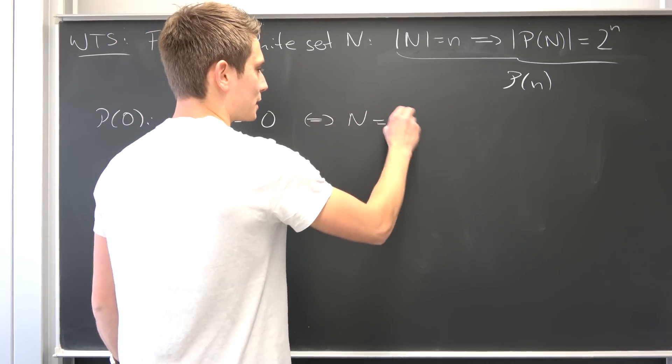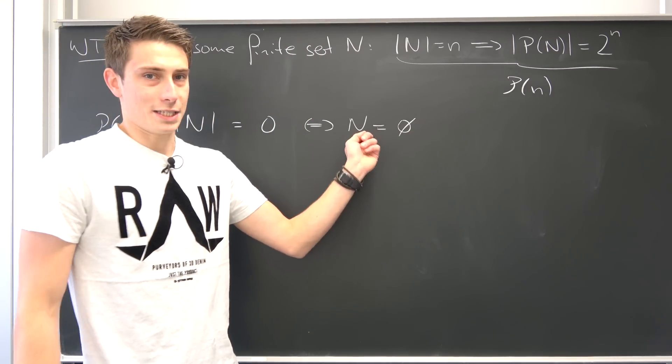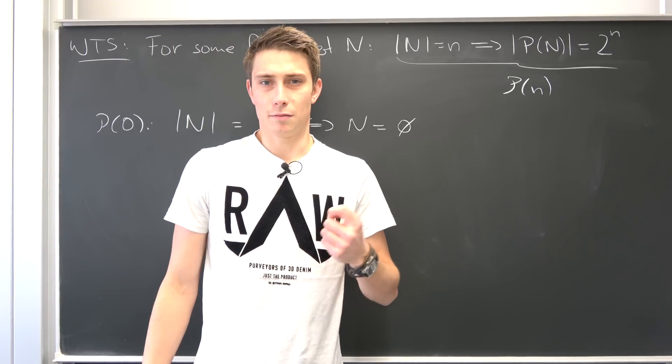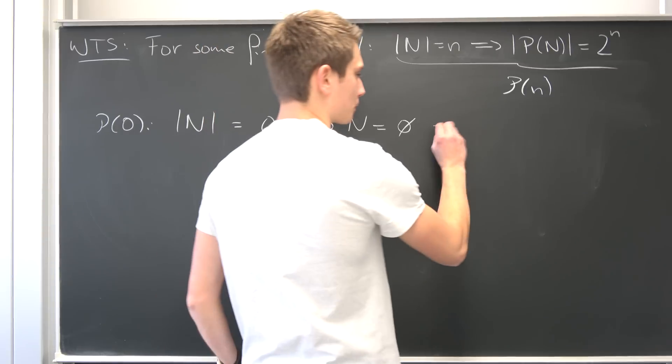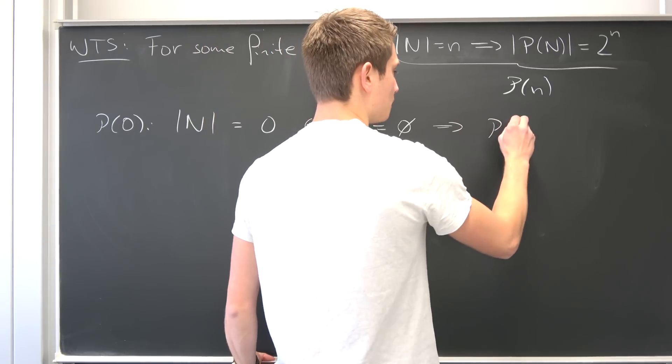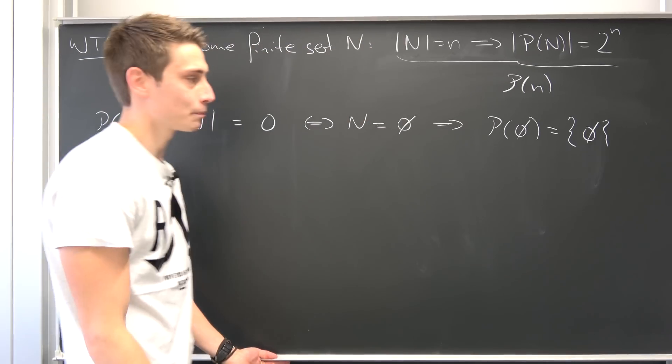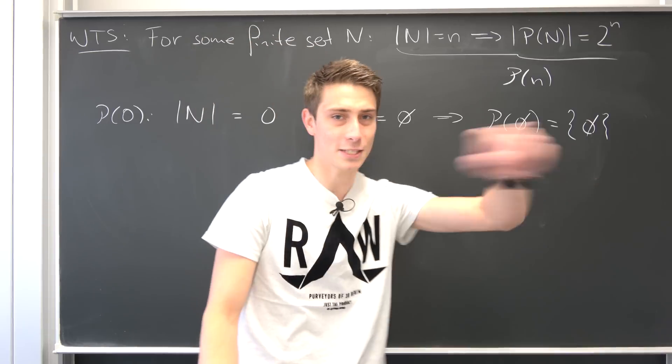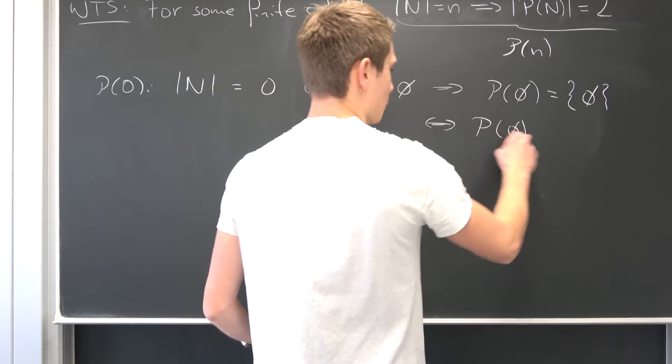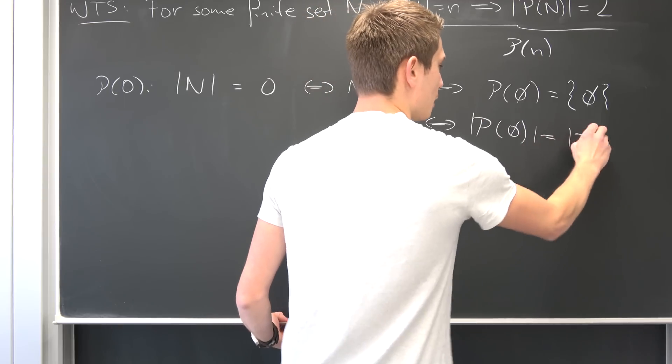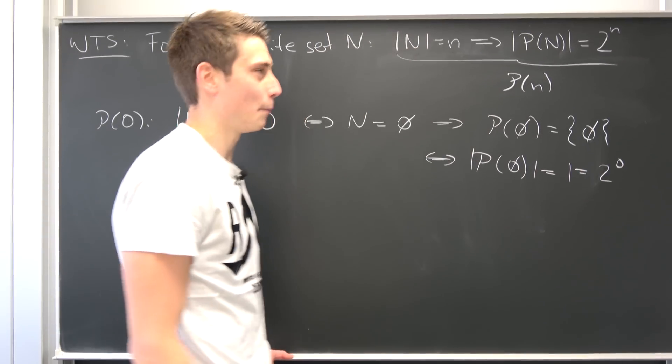That means that N is nothing but the empty set right now. But what does this mean for the power set? Well, the only subset of the empty set is the whole set itself, so the set which has the empty set in it. That means that the power set of the empty set is nothing but the set which has the empty set in it. Well now we can just basically count. Hey, there's one element in it. So the cardinality of the power set is now nothing but one. But what is one? This is 2 to the zero of power, 2 to the nought of power.